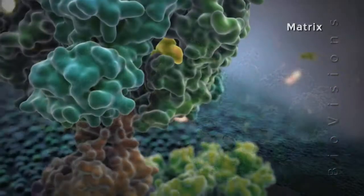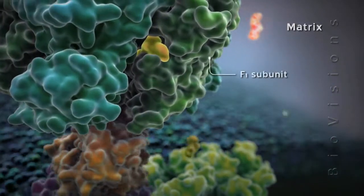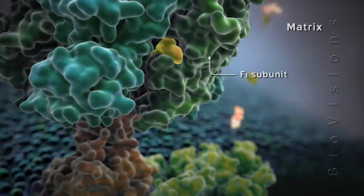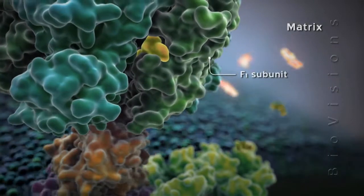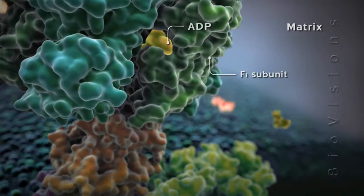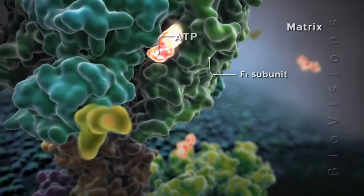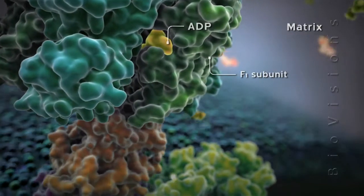The rotating shaft sequentially contacts the three catalytic subunits of the ATP synthase F1 complex, altering the subunits' affinity for ATP and ADP, and catalyzing the synthesis and release of ATP.